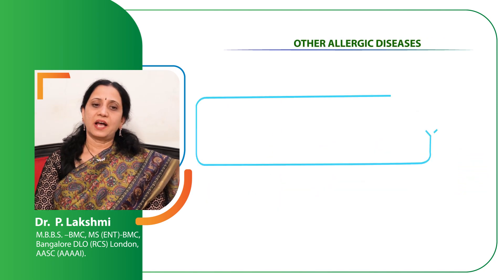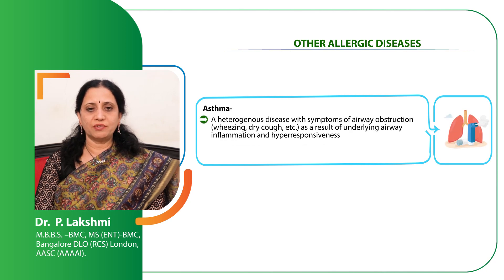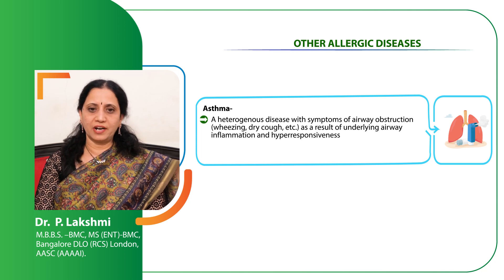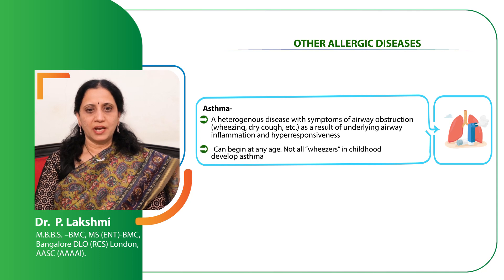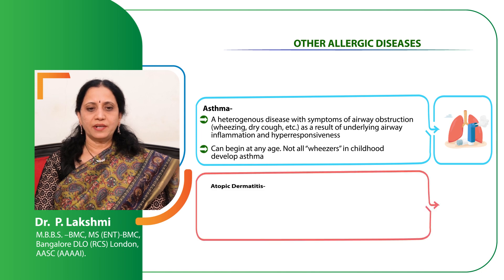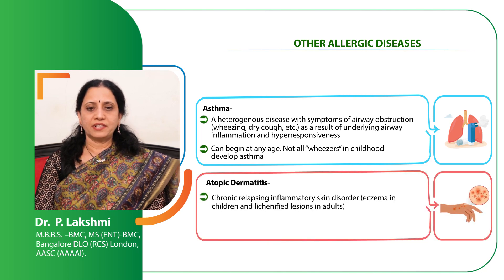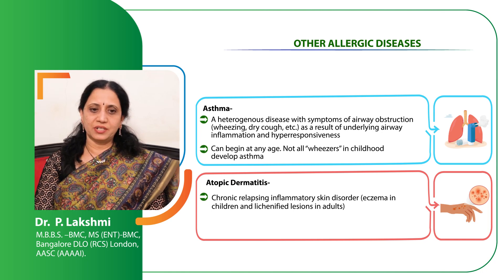Other allergic diseases are asthma and atopic dermatitis. Asthma is a heterogeneous disease with symptoms of airway obstruction resulting in wheezing and dry cough, as a result of underlying airway inflammation. It can begin at any age, and not all wheezers will develop asthma. Atopic dermatitis is a chronic relapsing inflammatory skin disorder, also called eczema in children, and it can also cause lichenified lesions in adults. It occurs over the facial and extensor aspects in young children and on the flexural aspects in adults.